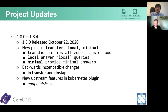In 1.8, there are also several backwards-incompatible changes. In the transfer and DNS type plugins, if you've ever touched those plugins, you'll want to take a look and make sure you update your config file as needed. We also have some new upstream features in the Kubernetes plugin that you'll want to review. Endpoint slices could be very useful.